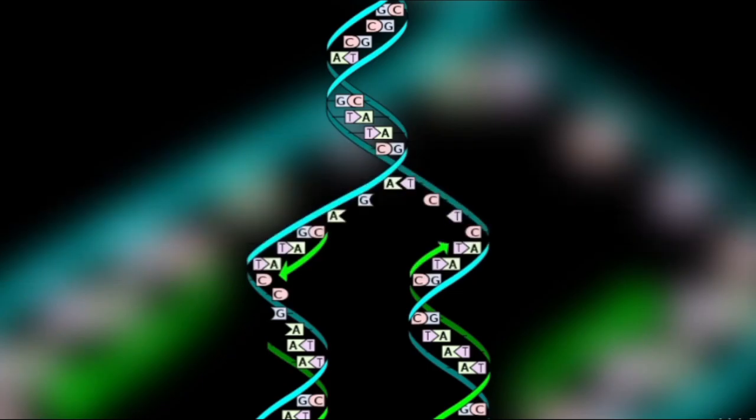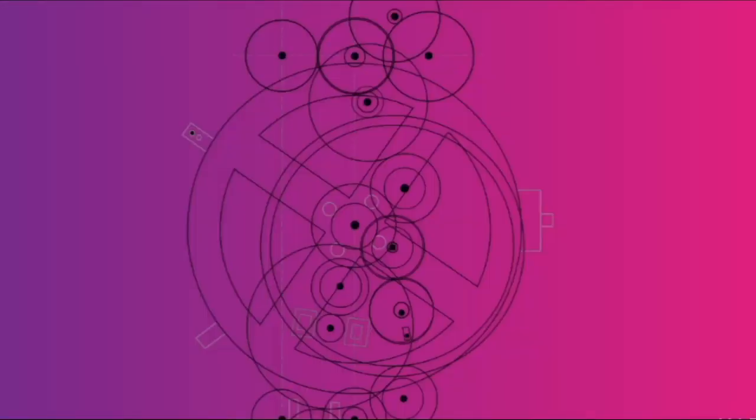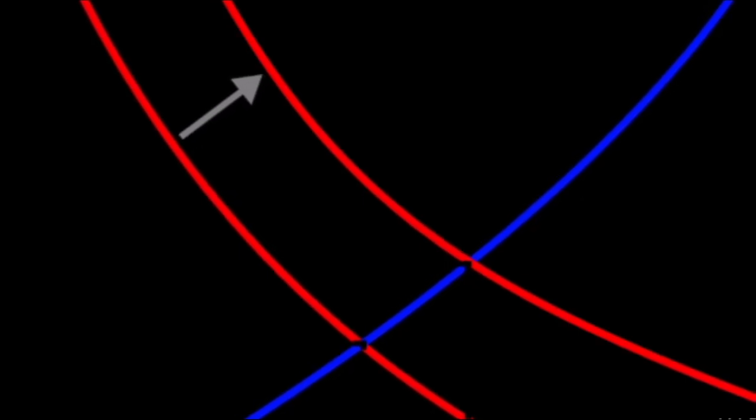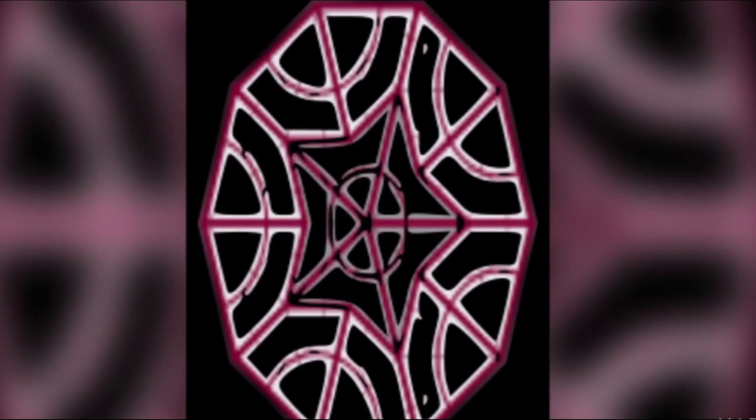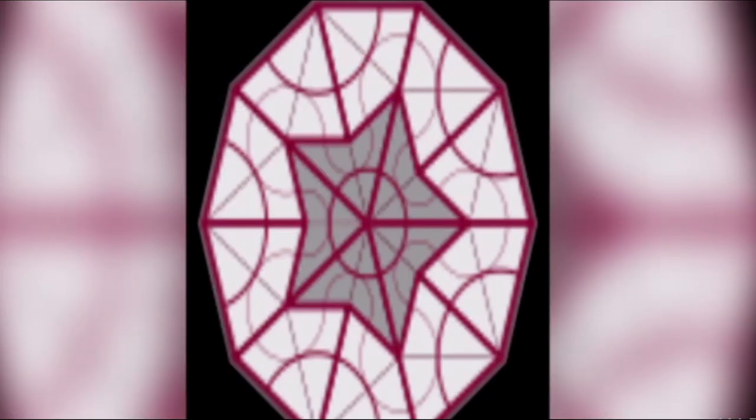Metaphase 1: homologous pairs move together along the metaphase plate as kinetochore microtubules from both spindle poles attach to their respective kinetochores. The paired homologous chromosomes align along an equatorial plane that bisects the spindle due to continuous counterbalancing forces exerted on the bivalents by microtubules — an attachment referred to as bipolar attachment. The physical basis of the independent assortment of chromosomes is the random orientation of each bivalent along the metaphase plate concerning the orientation of the other bivalents.